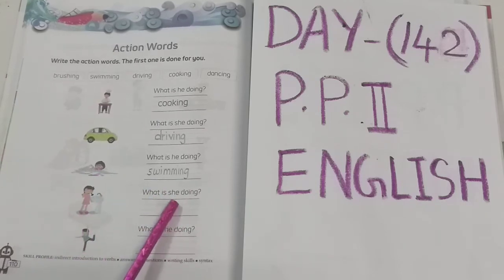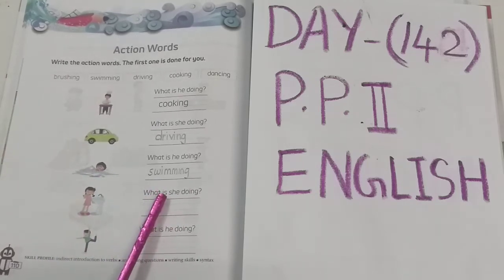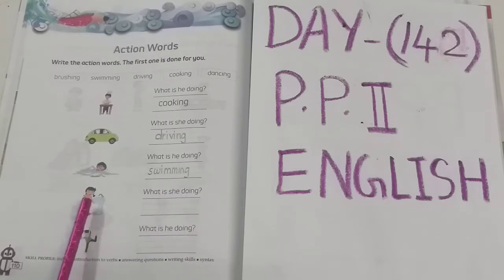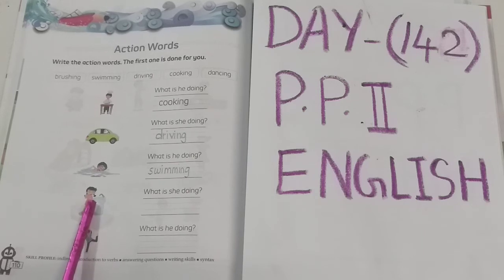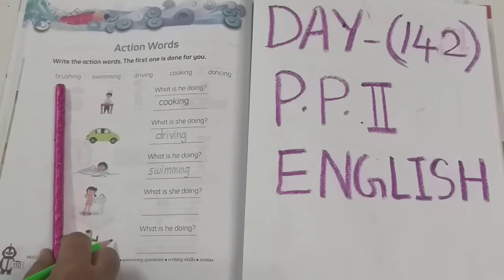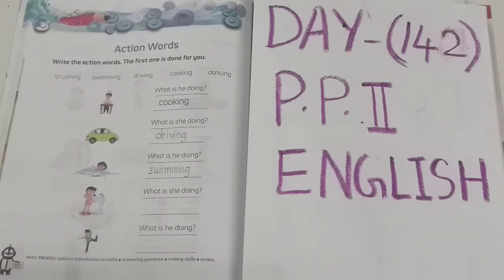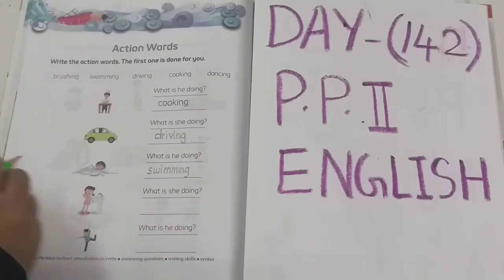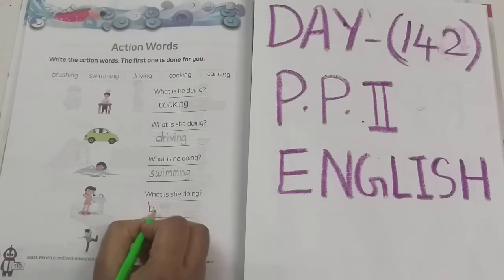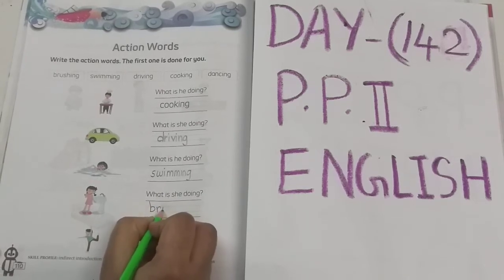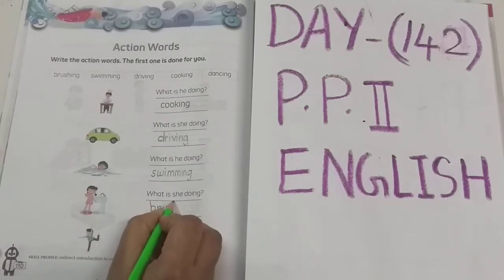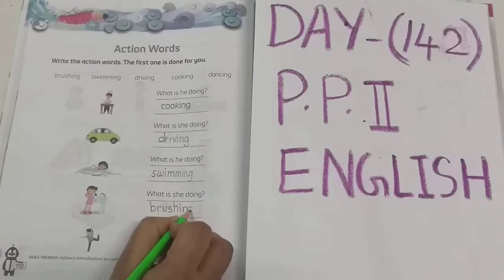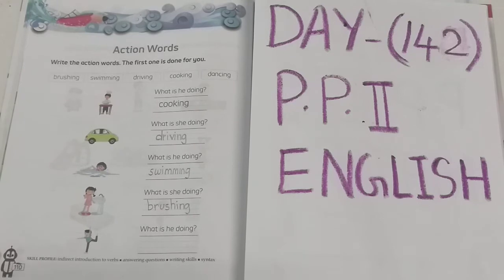See the next picture and then see the question here. What is she doing? Is she brushing? Yes. She is brushing. So you have to write the spelling of brushing here — B-R-U-S-H-I-N-G. Brushing.